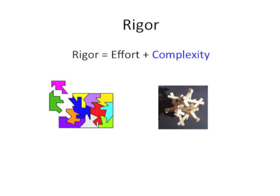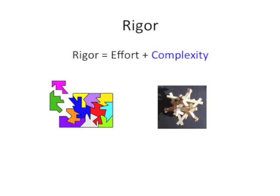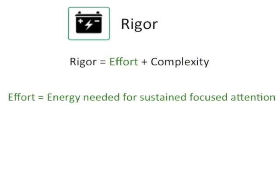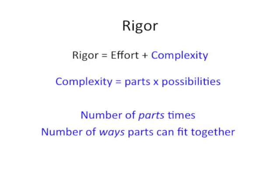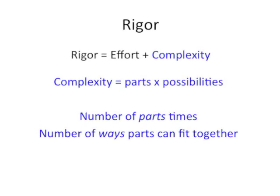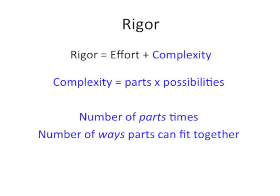Let's begin with the definition of rigor. Rigor equals effort plus complexity. Effort is the energy needed for sustained focused attention, and complexity is the parts times the possibilities, or the number of parts times the number of ways the parts can fit together.